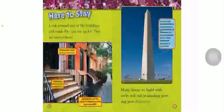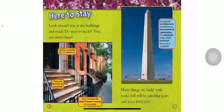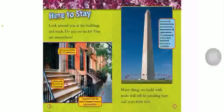Here to stay. Look around you at all the buildings and roads — do you see rocks? They are everywhere. Bricks are made up of clay minerals. Steps can be made of sandstone. Limestone can be used to make concrete for sidewalks. Many things we build with rocks will still be standing years and years from now.